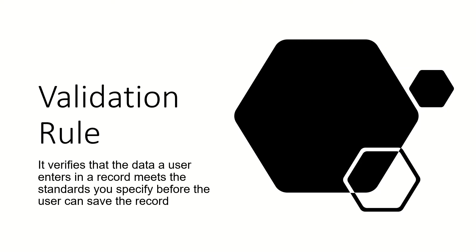In this video we will discuss validation rules — what they are and how we can use them so that we don't get raw data in our database. We will have some set of standards: for example, if it's a name field then only characters are allowed and no numeric values can be entered. Validation rules validate the input from the user and check if it meets the criteria; if the criteria is met, it shows an error message, otherwise it proceeds to the next step in the lifecycle.